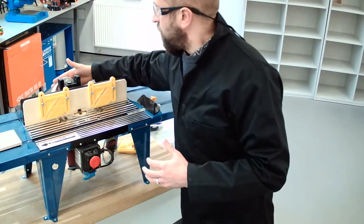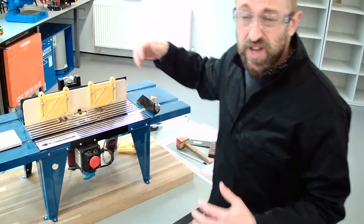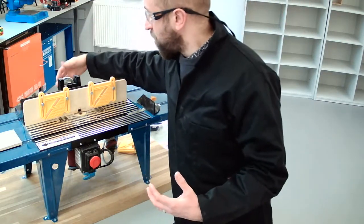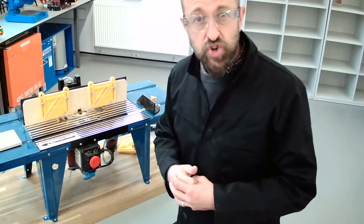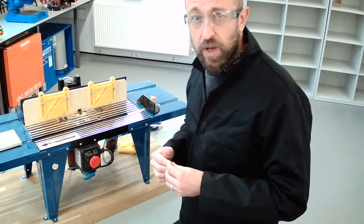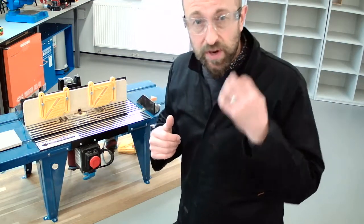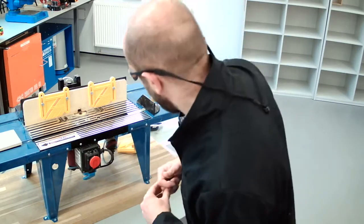We also need to connect up the extraction. Now, for the purposes of this demonstration, I've actually removed the extraction. So, hopefully, you'll be able to see the waste material coming out the back and you can understand why it's really important to extract the dust. Now, for that, we would use a vacuum cleaner. If we were to use extraction, I would be wearing a face mask as well. But I've just removed it for clarity so you can hear what I'm talking about.